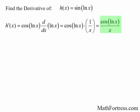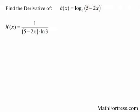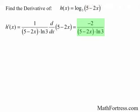Let's try a function with a logarithm base other than e. Find the derivative of h of x equals log base 3 of 5 minus 2x. The outer function is log base 3 and the inner function is 5 minus 2x. The derivative of log base 3 gives 1 over (5 minus 2x) times the natural log of 3, and multiplying by the derivative of the inner function gives the final derivative as negative 2 over the quantity (5 minus 2x) times the natural log of 3. Remember to include the natural logarithmic term.